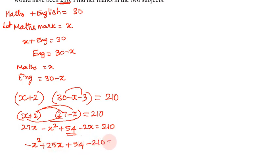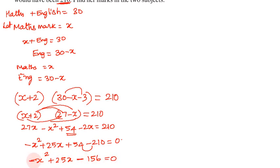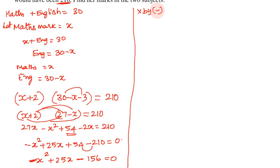So minus x squared plus 25x plus 54 minus 210 equals 0, giving minus x squared plus 25x minus 156 equals 0. Multiplying through by minus 1, we get x squared minus 25x plus 156 equals 0.